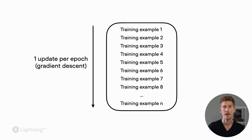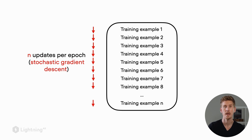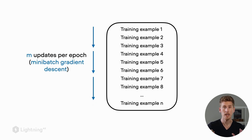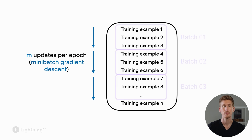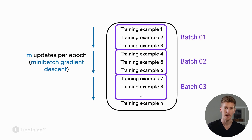To recap: in gradient descent we make one model update per training epoch; in stochastic gradient descent we make n model updates per training epoch, where n is the number of examples in the dataset. Mini-batch gradient descent is a hybrid between these two — we form small groups or batches of training examples and make one update after each batch.